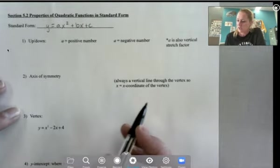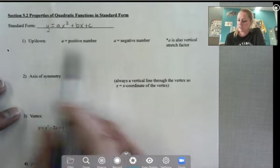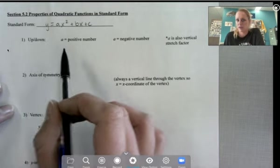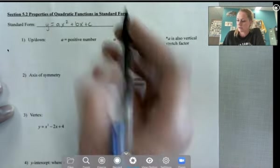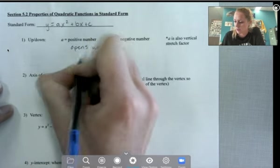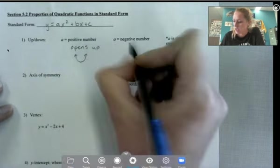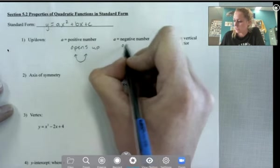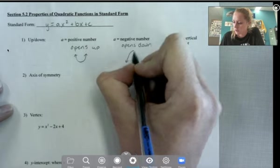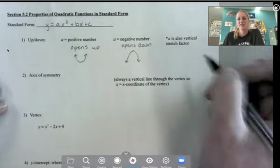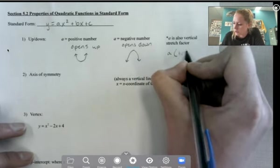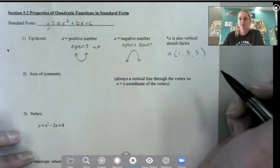And so what we need to know is how things are influenced. Up or down, if a is positive, it's going to open up. So it's still a parabola. And if a is negative, it opens down. And remember a is still that vertical stretch factor, so that's where we could do the 1, 3, 5 to get more points.